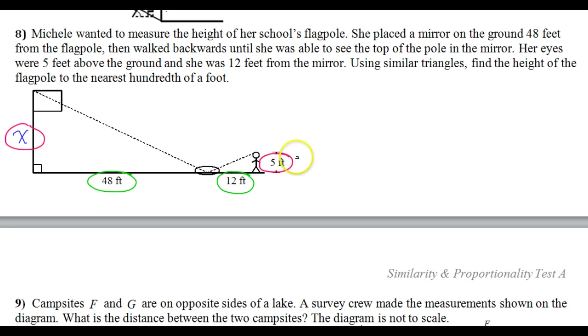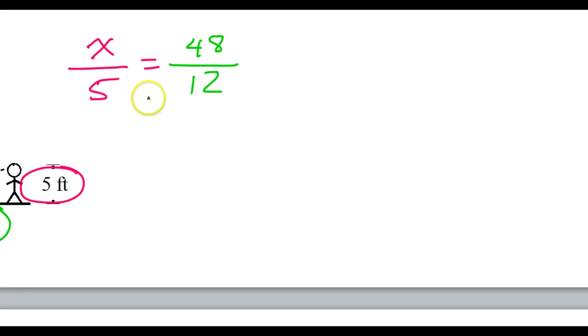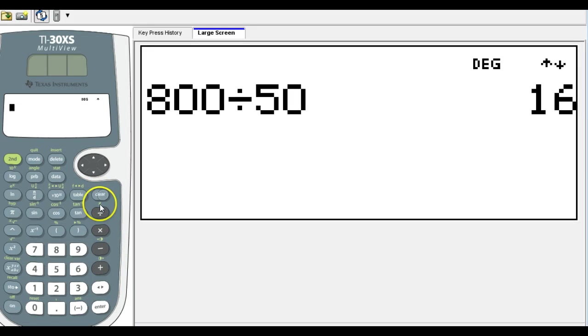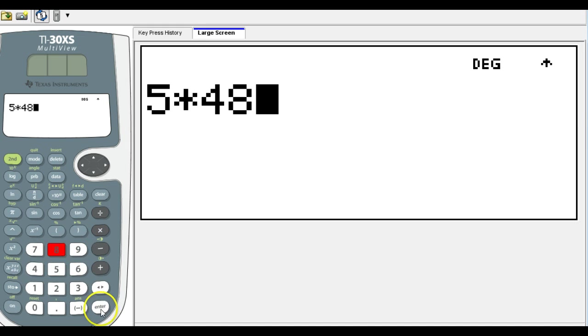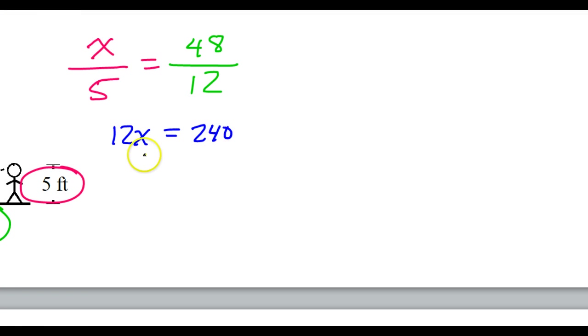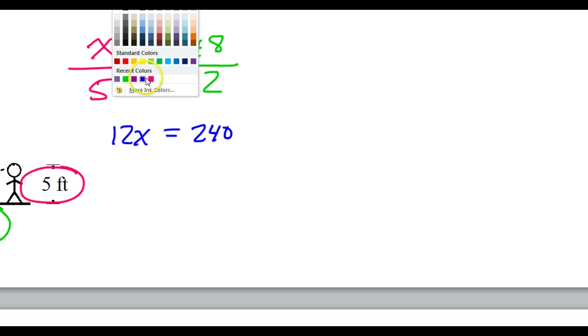Actually, I'll start with pink over pink. So x over 5 should equal 48 over 12. 12 times x is 12x. Then 5 times 48 is 240. And then, of course, we're going to divide both sides by 12.